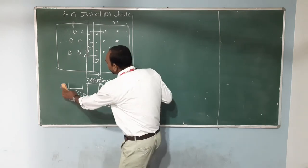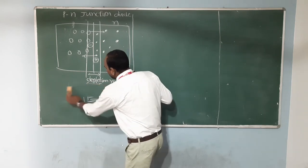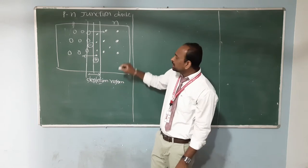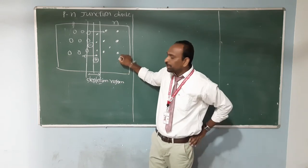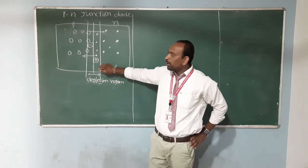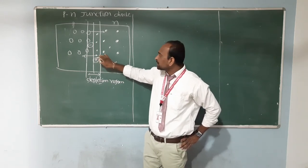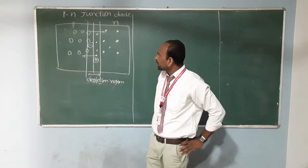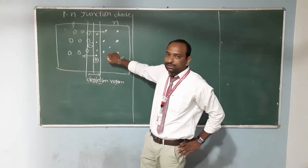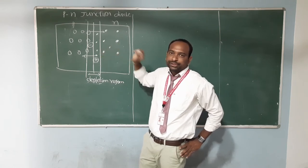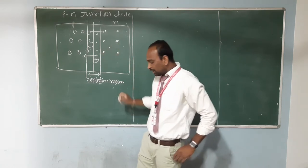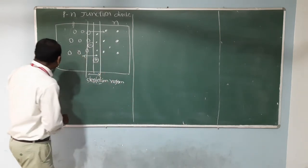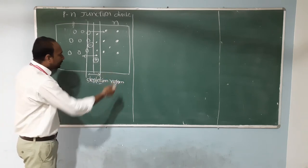This is the simple PN junction diode without applying any bias. Without biasing, the charge carriers will move from one semiconductor to the other. This junction we are calling the PN junction, or PN junction diode.